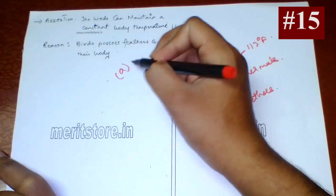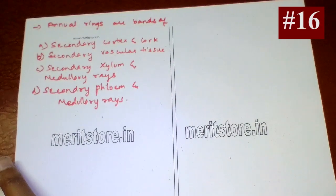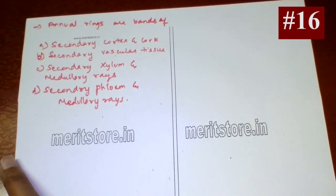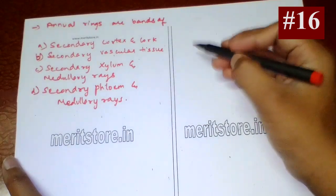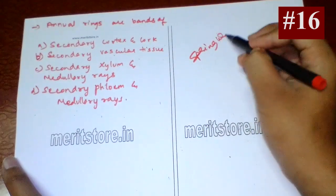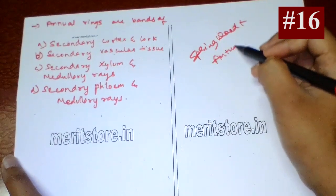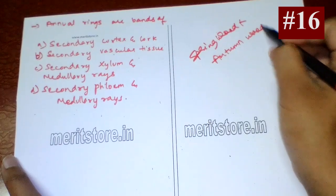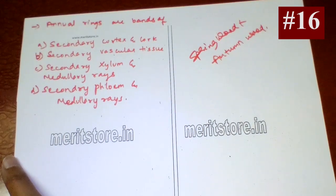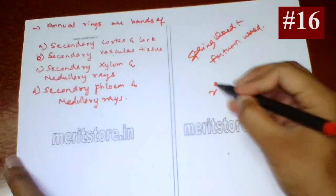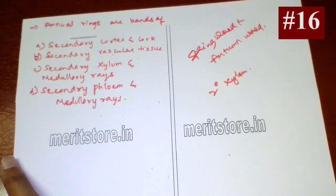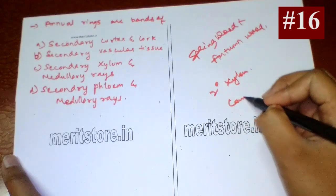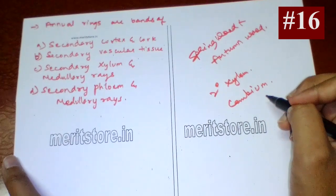Annual rings are bands of secondary vascular tissue. Spring wood plus autumn wood of a year constitutes the annual ring. Spring wood and autumn wood are parts of the secondary xylem formed during spring and autumn. The amount of wood is affected by the activity of cambium, which is the secondary tissue. So the answer is secondary vascular tissue.